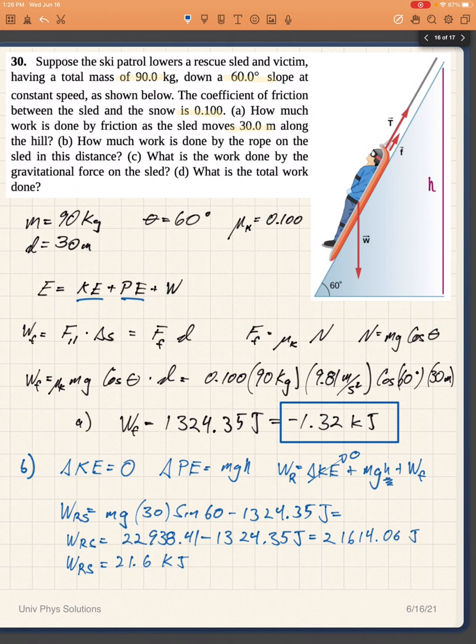And in keeping with my previous convention for the signs that would be negative. The work done by the gravitational force, again is the mgh, and that actually is part C. So we already have part C. So work done by the gravitational force would be 22,938 so 2.3, 22.9 kilojoules.